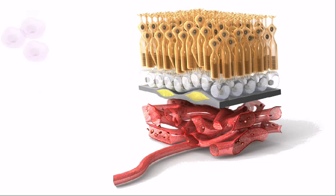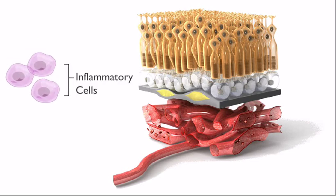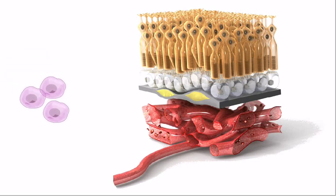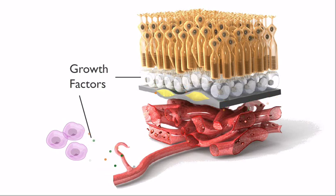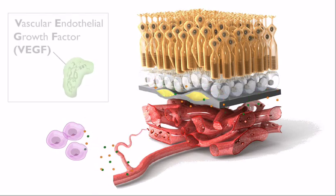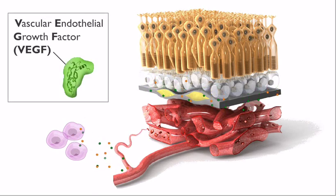As drusen accumulate, they can cause inflammation. Inflammatory cells are then recruited to the retina, and these cells, along with the RPE, begin releasing growth factors that cause blood vessels to grow. The primary growth factor released is called vascular endothelial growth factor, VEGF.